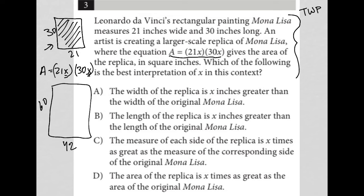Choice A: The width of the replica is X inches greater than—nope, that's not true. We're not adding X, we're definitely multiplying by X. Choice B: The length of the replica is X inches greater—nope.